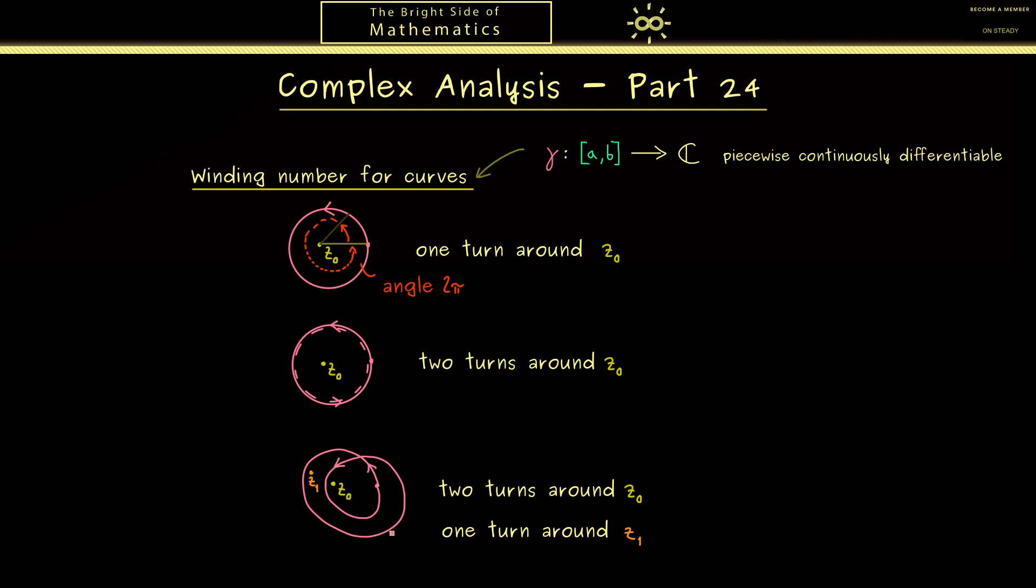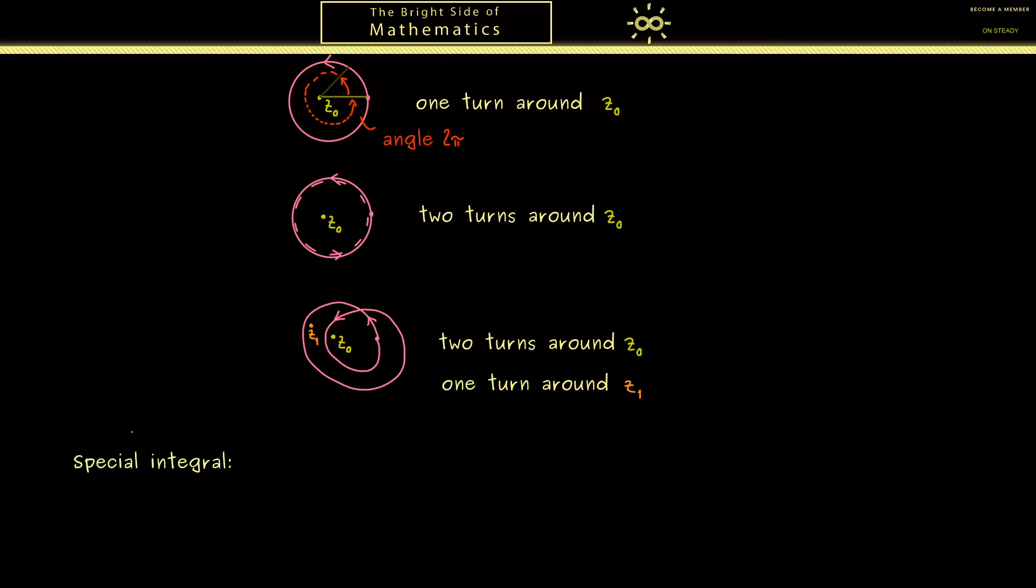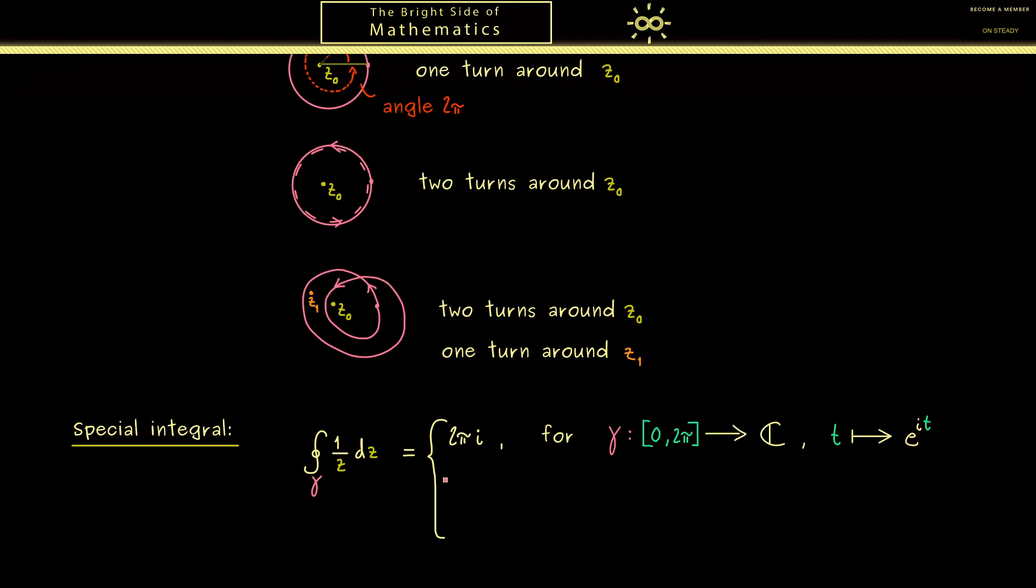But now the question is, do we have a good method to measure the turns around a given point? Or to put it in other words, what should be our definition for the winding number? Indeed, we already have something for this because we know a special integral. It's the closed integral of the function 1/z. In fact, we already know it's the value 2πi. This is what we have already calculated when γ is the circle around the origin. For example, the parameterized curve could be given as γ from the interval [0, 2π], where γ(t) is given by e^(it).